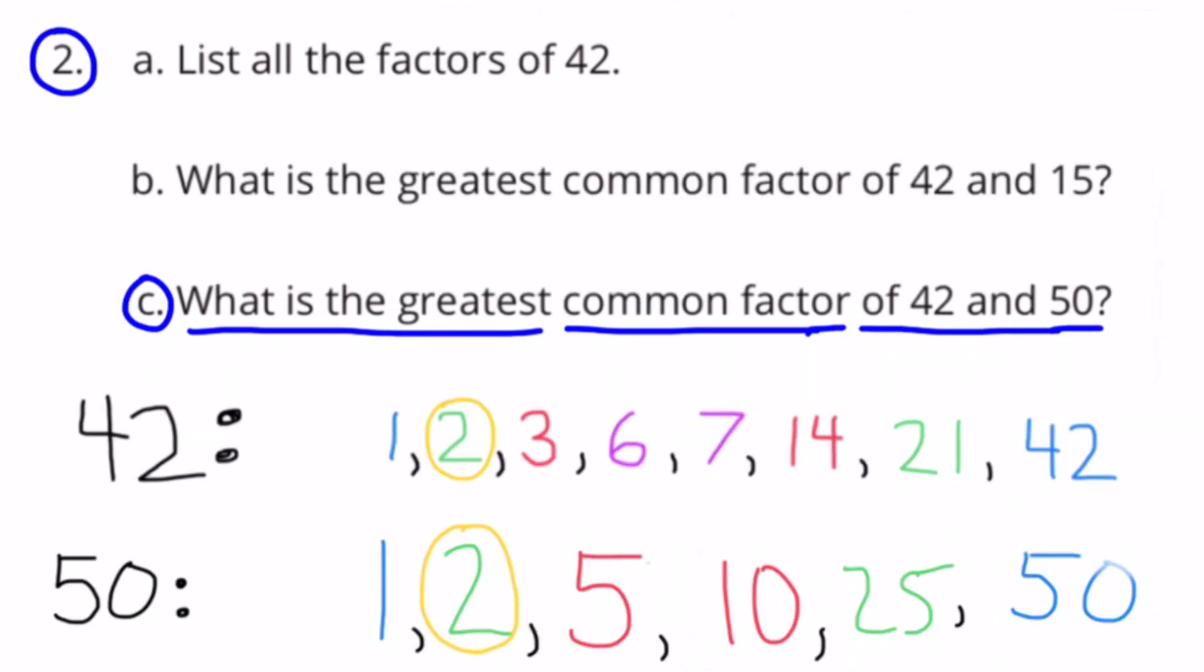Well, it's not very large, but it's the largest one that they have in common. The greatest common factor of 42 and 50 is 2.